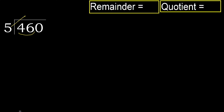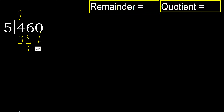5 multiplied by which number is nearest to 46 but not greater? 5 multiplied by 9 is 45, which is not greater than 46. 46 minus 45 is 1.